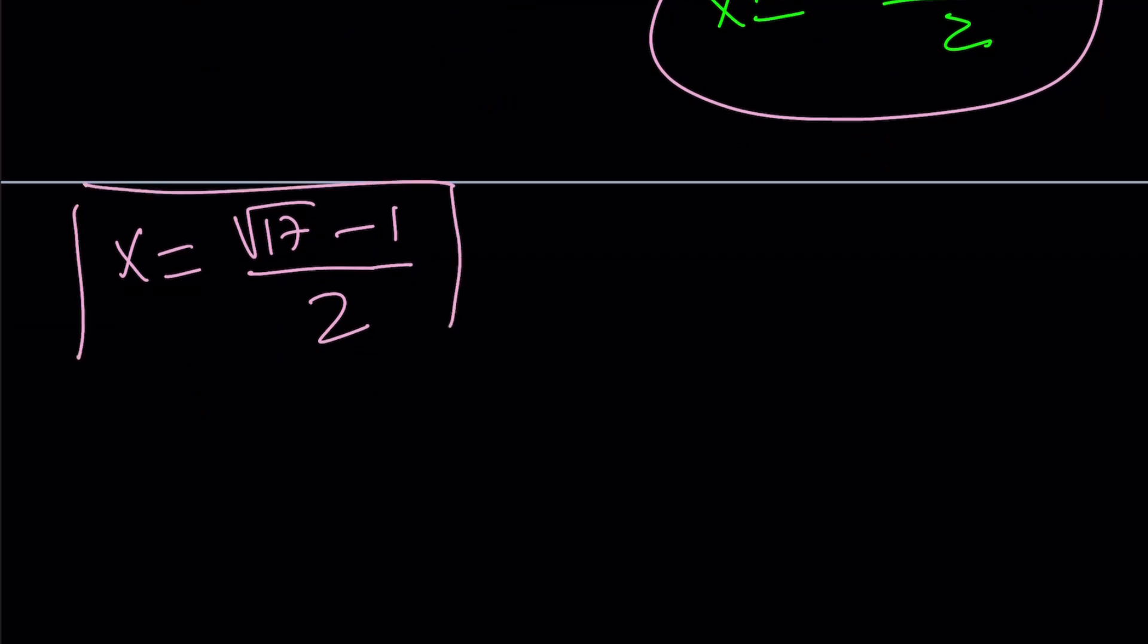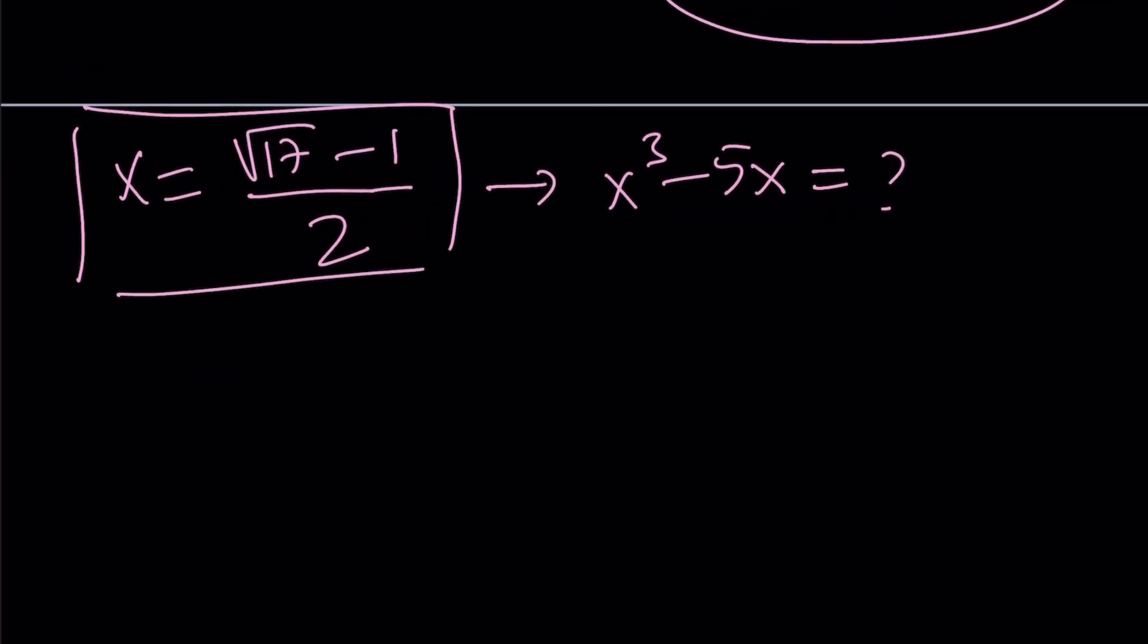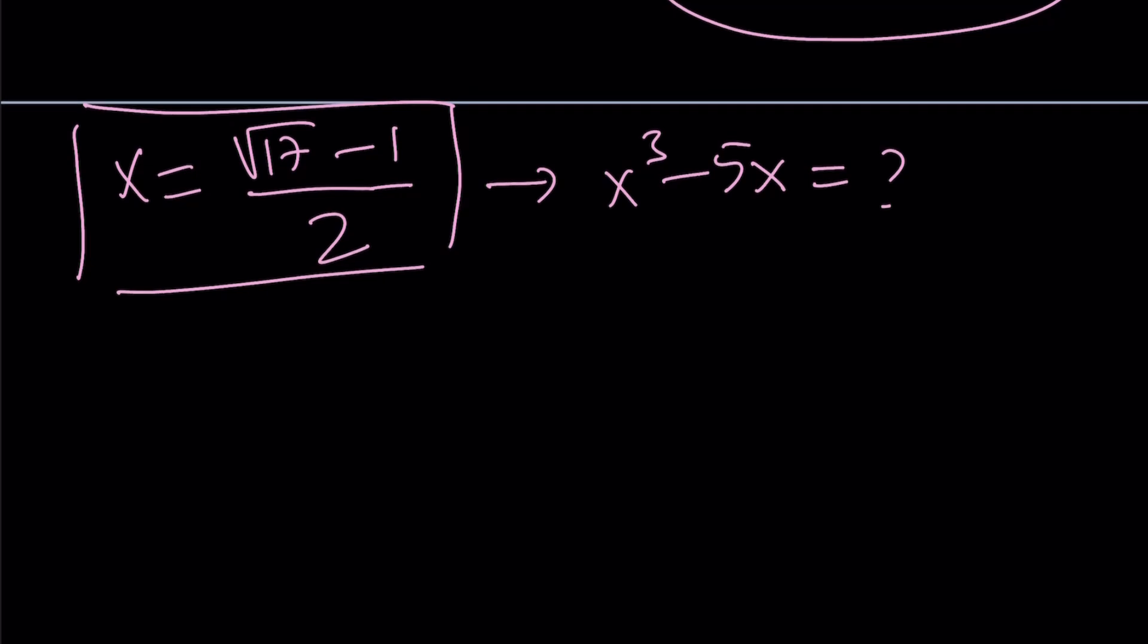Now, I'm going to go ahead and plug this into my expression because I'm trying to evaluate x cubed minus 5x for the x value that satisfies the first equation. That's an important trick. And I'll use it in other methods. So let's go ahead and plug it in. How do you cube this? You have to cube this and then subtract 5 times this, right?